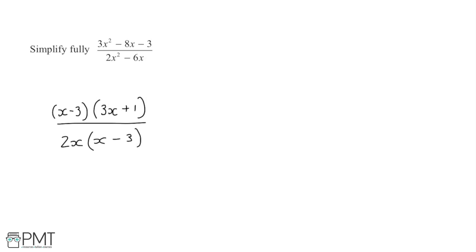Then I can just check this works. If I expanded this out, we'd have 3x squared add x minus 9x minus 3, and that would give us 3x squared minus 8x minus 3 when simplified. So that is going to be correct here.